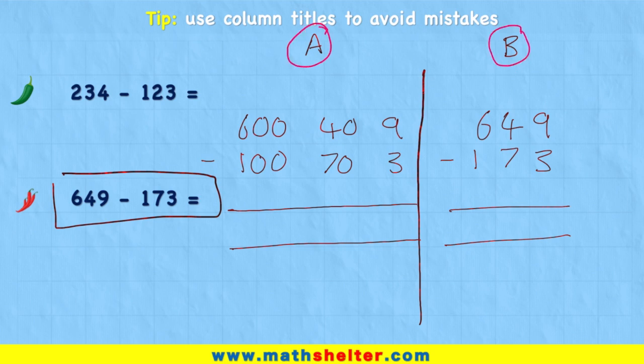Type A is the expanded method of column subtraction. Now I want to look at my top tip, and I want to think about adding my column titles: ones, tens, and hundreds; ones, tens, and hundreds. This will help me just make less mistakes, because I can now clearly see I've put the digits in the right space.